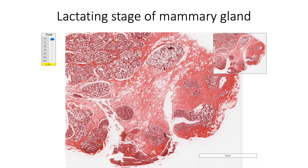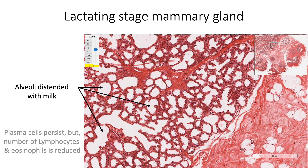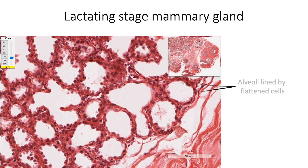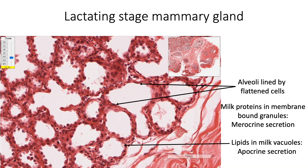In the lactating stage of the mammary gland, the alveoli are distended with milk. Although plasma cells persist, the number of lymphocytes and eosinophils are reduced in the stroma. The distended alveoli are lined by flattened cells. Milk proteins are seen in membrane-bound granules and are extruded by merocrine mode of secretion. Lipids in the milk form milk vacuoles and are extruded by apocrine mode of secretion.